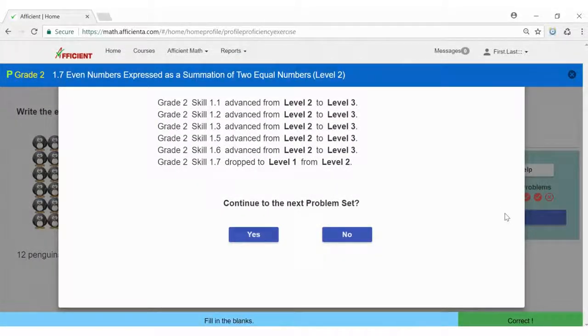In a later round, the skills will come back and if you answer them correctly, they will move up to level three, and if you answer incorrectly, they will drop to level one.